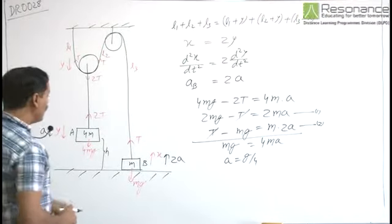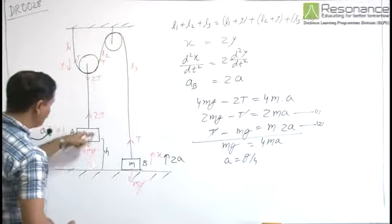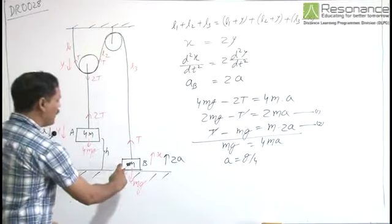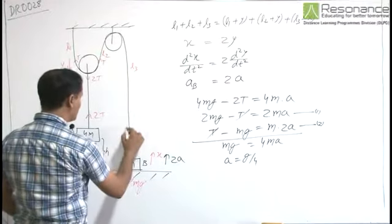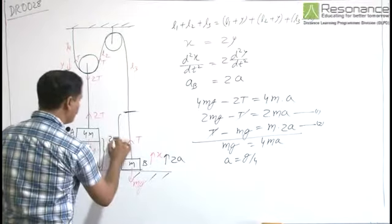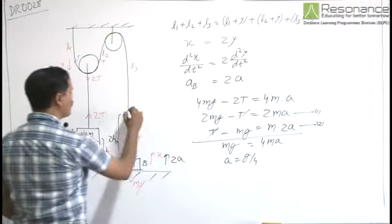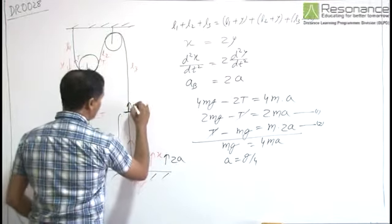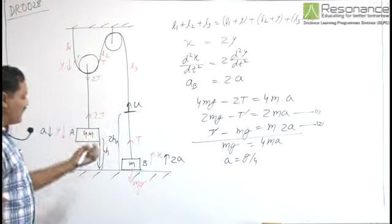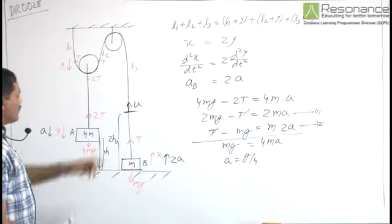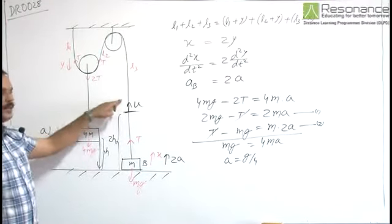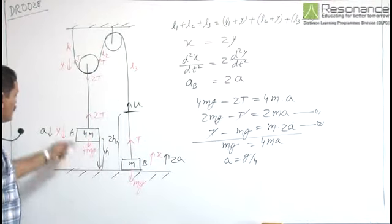During the time when the block A drops by h, B moves up by 2h. When A comes down by h, B moves up by 2h with some speed say u. Speed u at that instant, during the time of fall of A, B accelerates upward and attains some speed.